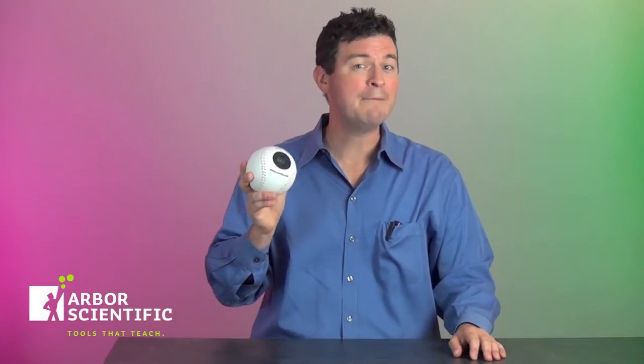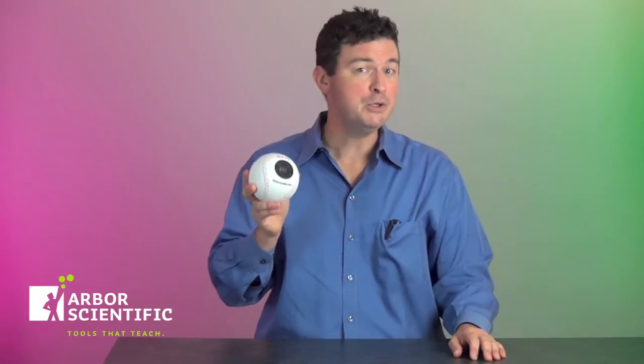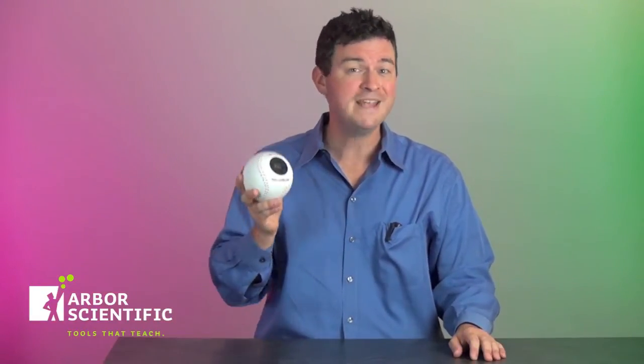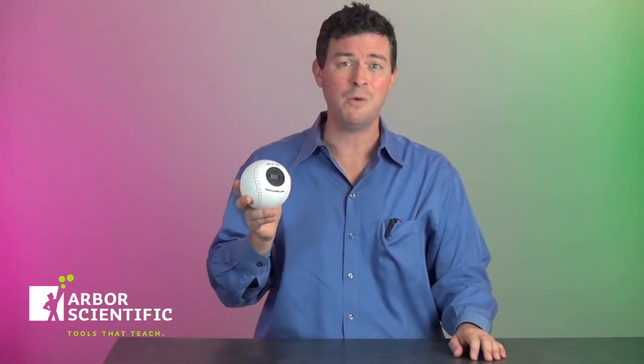If you really want your students to wrap their mind around the concept of how falling objects behave, and you aren't one of those science teachers still clinging to the insistence of obtaining the absolute precision of 9.81 meters per second squared in the lab, then the G-Ball is exactly what you're looking for.